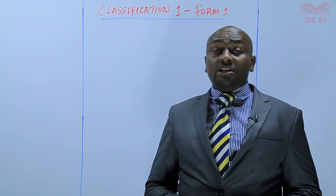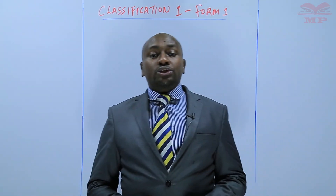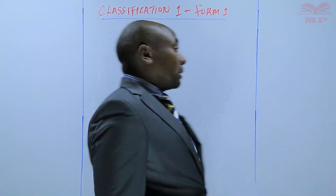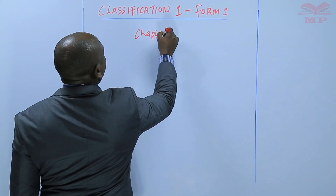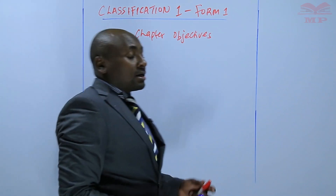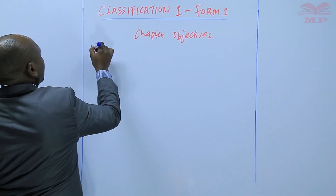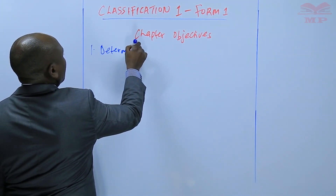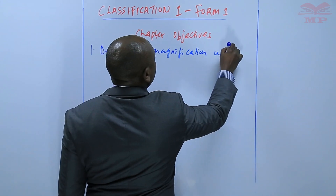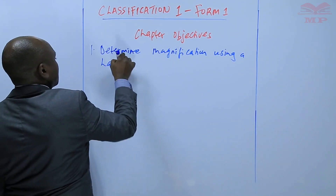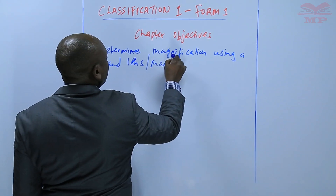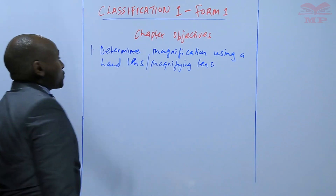As we start this topic, it is important to go through the objectives of the chapter — that is what every student is expected to know or to understand by the end of this particular topic. The first objective is to be able to determine magnification using a hand lens, also known as a magnifying lens.